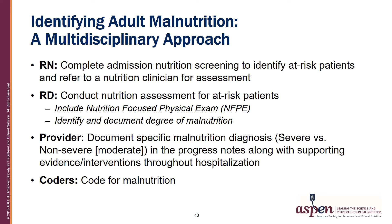A multidisciplinary approach is key to identifying adult malnutrition and providing optimal nutrition care. The nurse would complete the admission nutrition screening to identify at-risk patients and refer them to a nutrition clinician for full evaluation. The registered dietitian would conduct a full nutrition assessment, including a nutrition-focused physical exam to evaluate for fat loss, muscle loss, edema, and grip strength. The dietitian would then identify and document the degree of malnutrition and context, as well as an intervention plan. The provider would document the specific malnutrition diagnosis in progress notes, including supporting evidence and interventions. Finally, the coders would code for malnutrition.